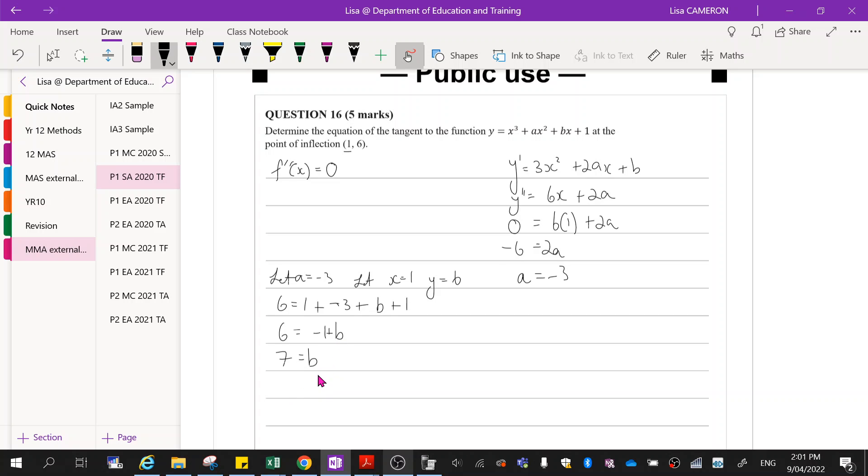Okay, so I've now determined what this equation is. So now I can say y equals x cubed minus 3x squared plus 7x plus 1.